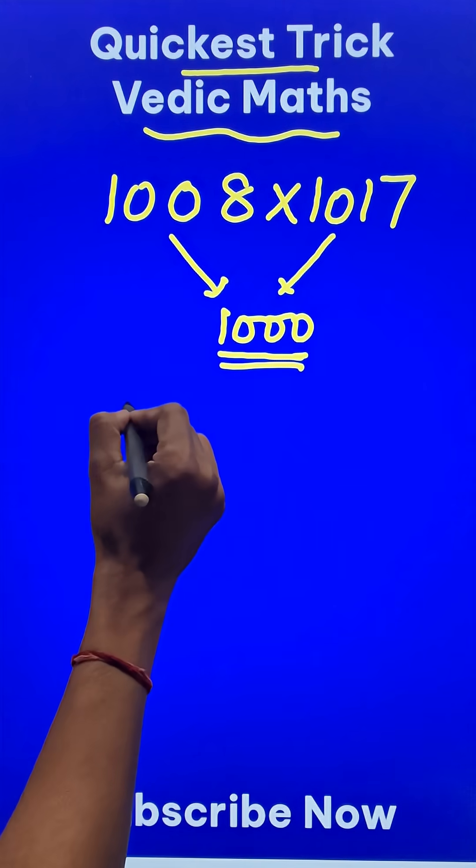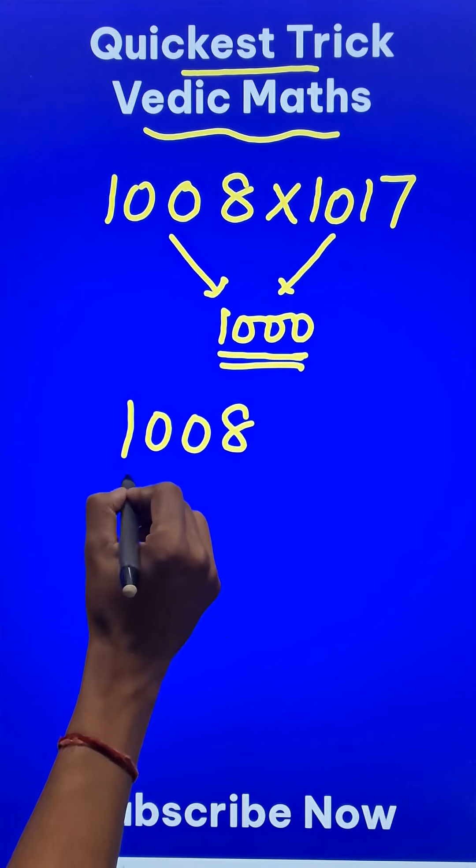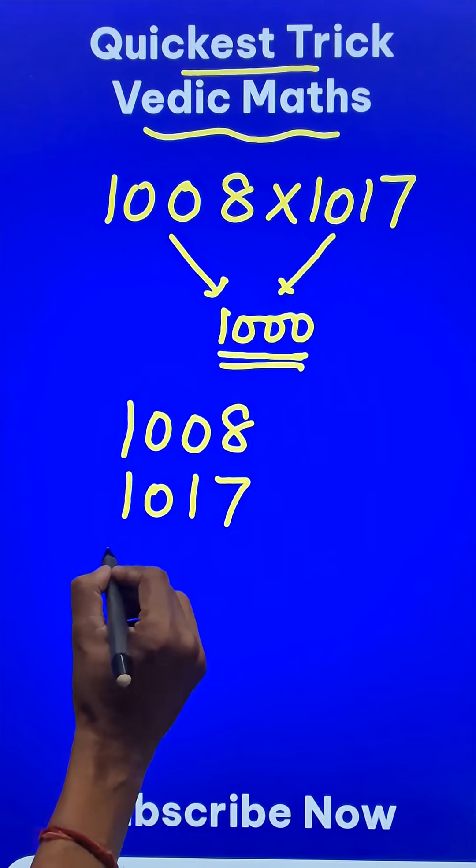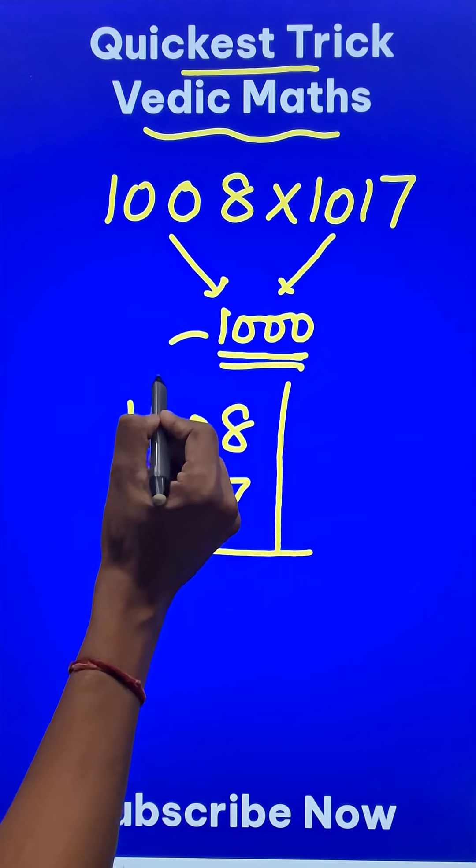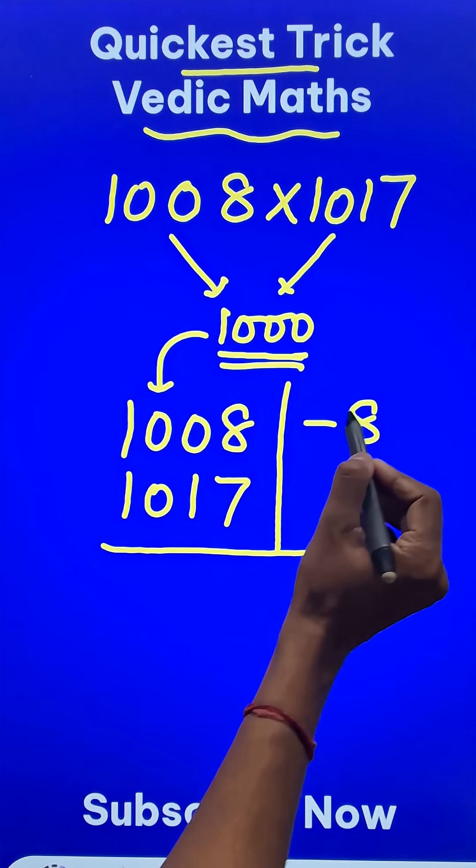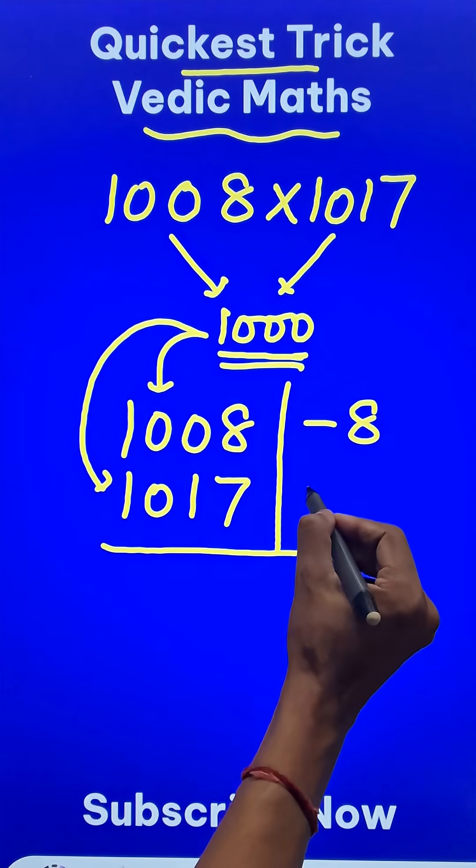So what do you do in such cases? You write 1008 and 1017 one below the other just like you do in traditional multiplication. And then 1000 minus this number is negative 8 and 1000 minus this number is negative 17.